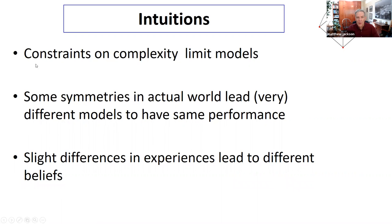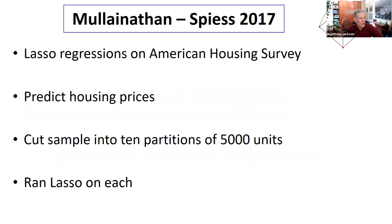The intuitions here are that constraints on complexity limit people's models. If there are symmetries in the world but asymmetries in their experiences, that leads them to focus on different dimensions and have different beliefs. Let me show you data that's quite consistent with this.